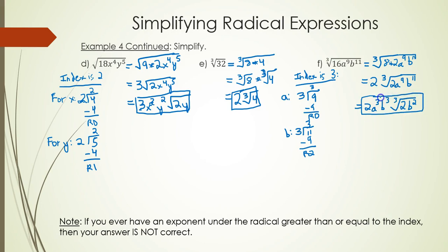Never confuse the index with one of the powers on the variables — be careful with that. A good way to check your answer: if you ever have an exponent under the radical greater than or equal to the index, your answer is not fully simplified. Notice the power on b is 2 and the index is 3; the power on y is 1 and the index is 2. Both are fully simplified. Thank you for watching.